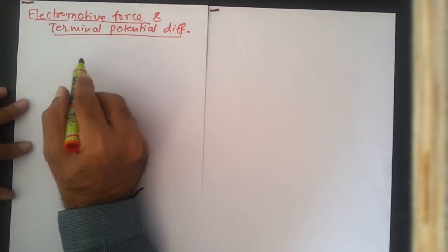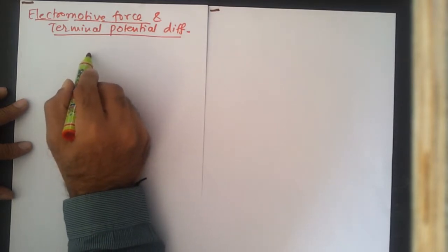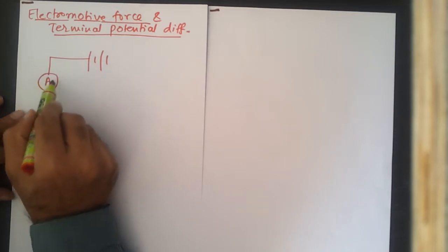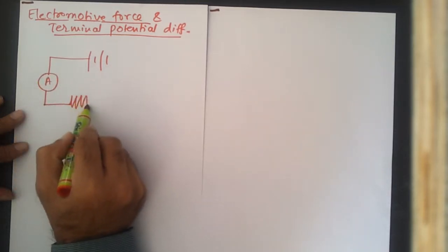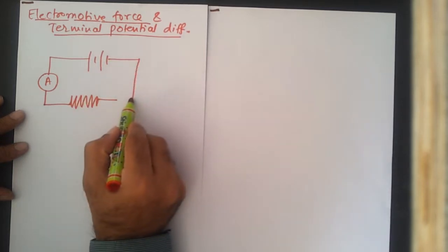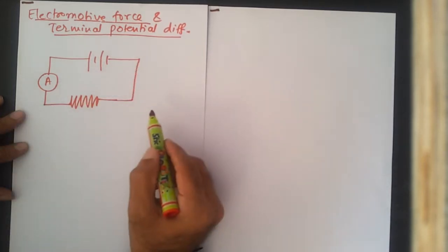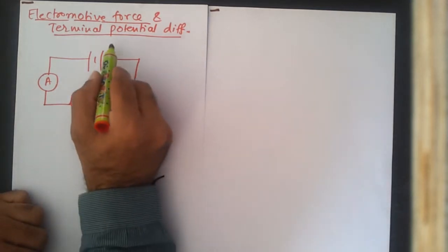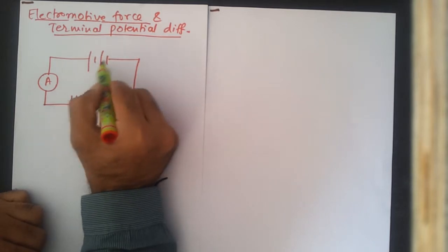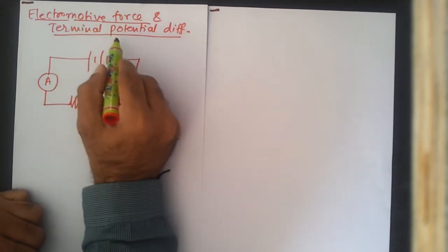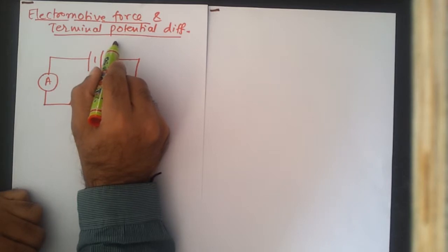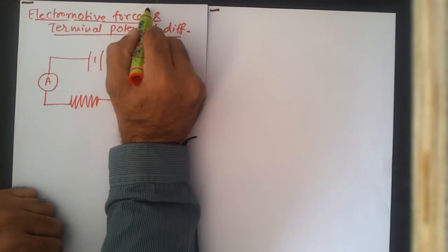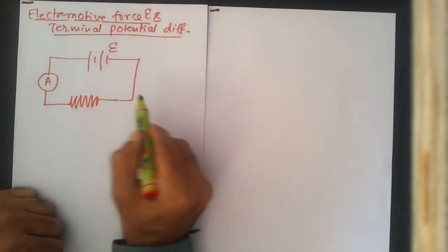To help us understand that, let us draw a very simple electric circuit. This is a battery and current is flowing in this direction. This is an ammeter which measures electric current, and this represents the resistor. I'm interested in understanding the electromotive force epsilon of this particular battery. Electromotive force is denoted by symbol epsilon. Its unit is volt. Our objective is to understand what we mean by electromotive force.